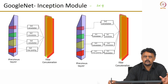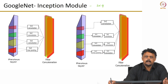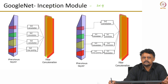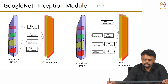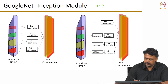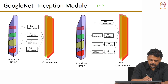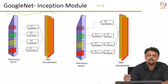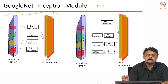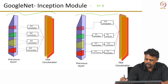They built a convolutional block which had multiple filter sizes, and they let the network backprop — the learning through which the network learns — and let the backprop decide which weights to update based on the objective function. So let us quickly look at this inception module. There are two images: the naive implementation and the actual implementation that they followed.